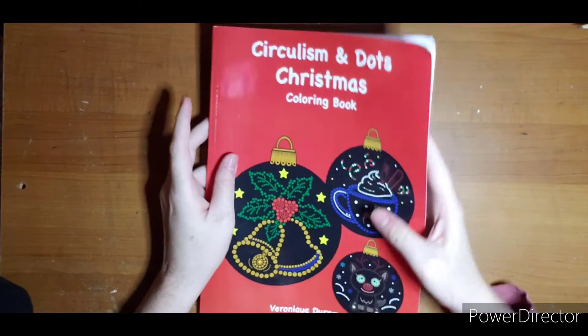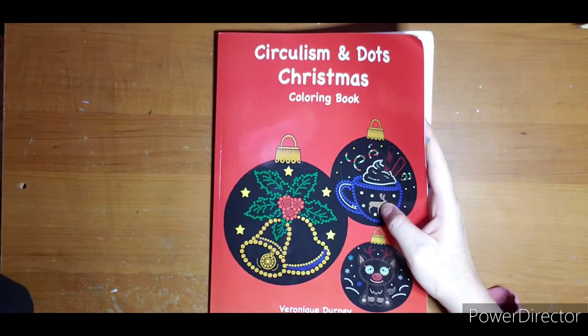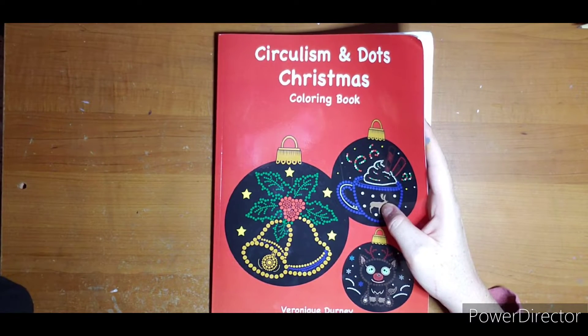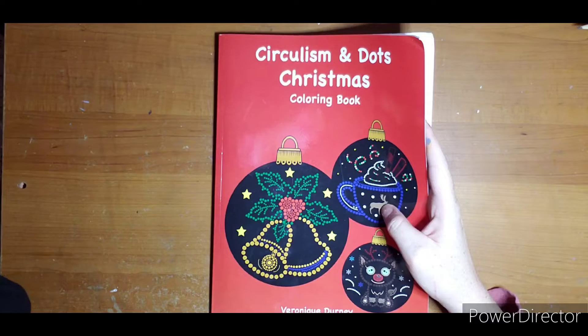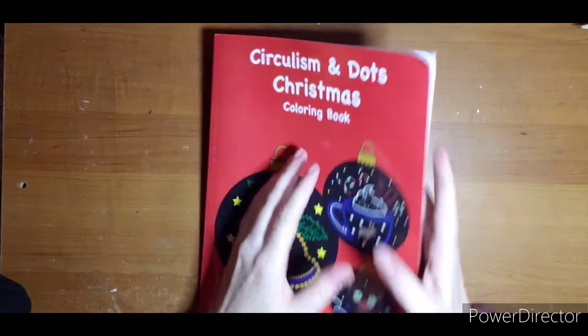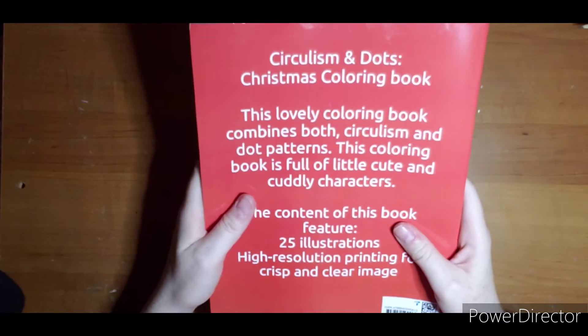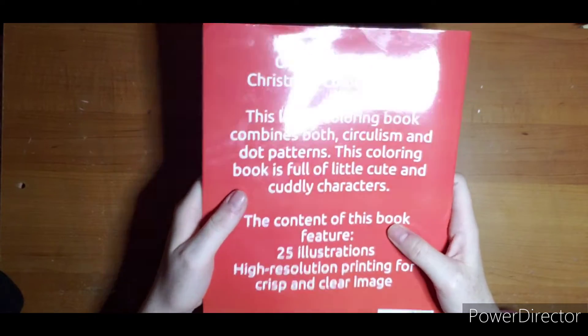Hi everyone, welcome. I'm going to do a flip through of this book. This is a new release by Veronica Derny - this is Circulism and Dots Christmas coloring book. Here is the back, it has 25 images in it.